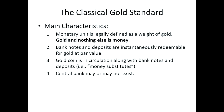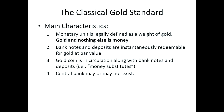What are the main characteristics of the classical gold standard? The monetary unit is defined as a weight of gold. Gold and nothing else is money. Bank notes and deposits are instantaneously redeemable at par for gold, and gold coin is in circulation. Mises stressed that for a genuine gold standard you have to have gold coins in circulation among the population. Therefore the bank deposits and notes are merely money substitutes — what Mises calls money substitutes. They are claims to gold, whether fully backed or not, that are acceptable in exchange in lieu of the gold coin. They are just a more convenient way of transferring the ownership of gold from one person to another.